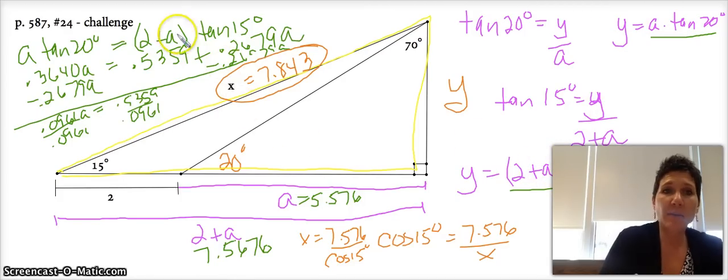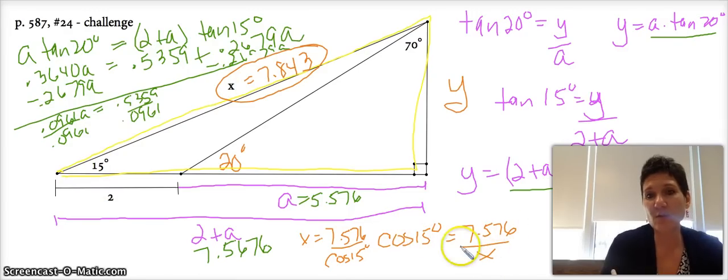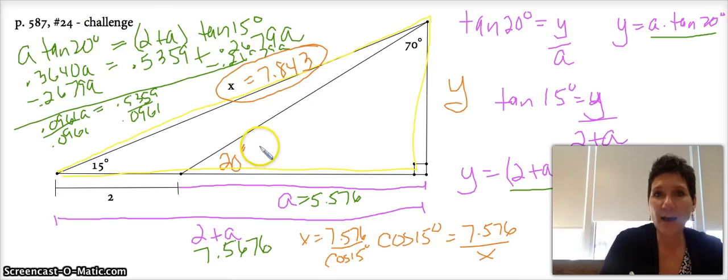And by doing some magical math over here, we came up that A was equal to 5.576. Once we had what A was equal to, we were able to find x because we now know the length of this side of the big triangle was 7.576, and using the 15 degree angle we use the cosine of that angle is equal to 7.576 over x, and we got x to equal 7.843. I hope this was helpful.